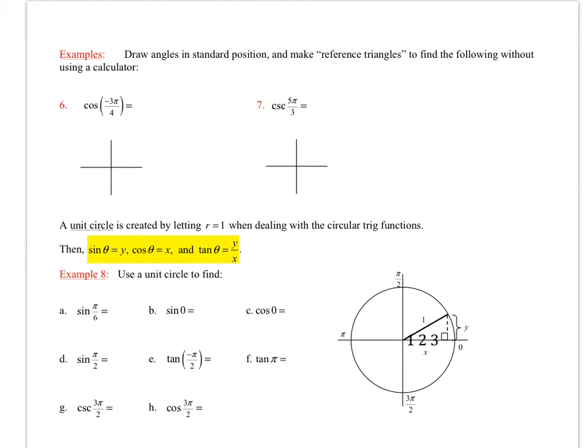More examples. We want to draw the angle now in standard position and make reference angles to find the following without a calculator. So if I take this one, cosine of negative 3π over 4, that's going to be halfway over here. And when I do that, that's going to be either square root of 2 over 2 or negative square root of 2 over 2 since it's in the third quadrant. I keep on writing my 2s that look like 3s. Negative square root of 2 over 2. Then the cosecant of 5π over 3. If I go 5π over 3, that would be in a counterclockwise direction. I go over 3π over 2, and I'm going to be about here. That's going to be in the fourth quadrant.